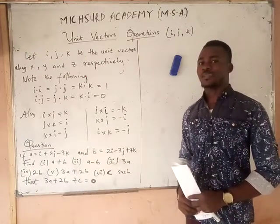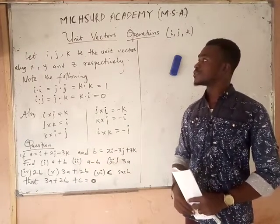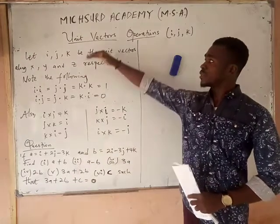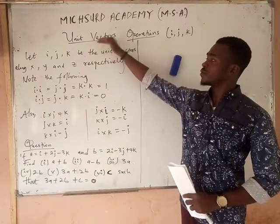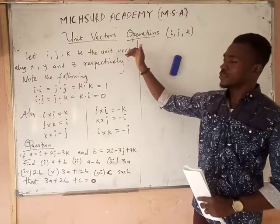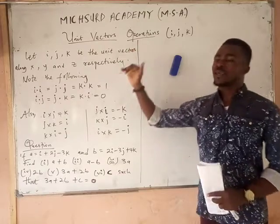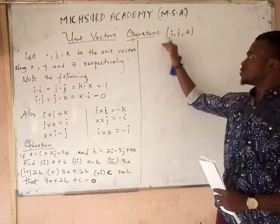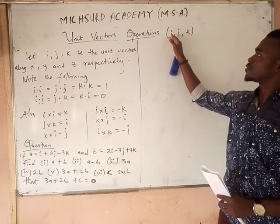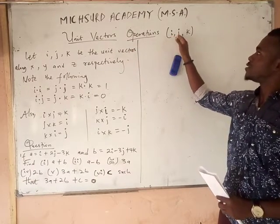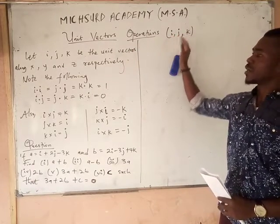Welcome to the Microsoft Academy. Today we are going to be looking at the unit vector operation. These unit vectors we are going to call them i, j, and k.